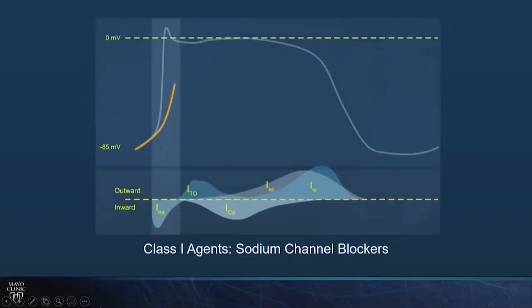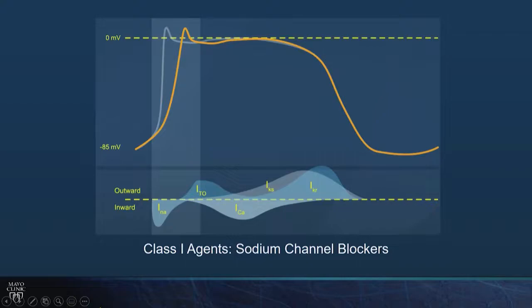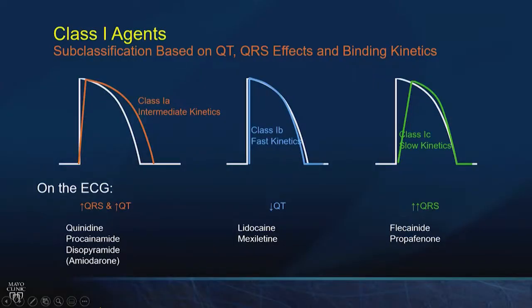Class 1 agents, sodium channel blockers, affect phase 0 of the action potential, blunting it and resulting in QRS — not QT — prolongation. When I think about a class 1 agent, I'm typically thinking about flecainide or propafenone — class 1C agents — which are quite specific in their effect on the sodium channel. These are the ones we monitor by looking at QRS duration; they have very little effect on the QT interval itself.